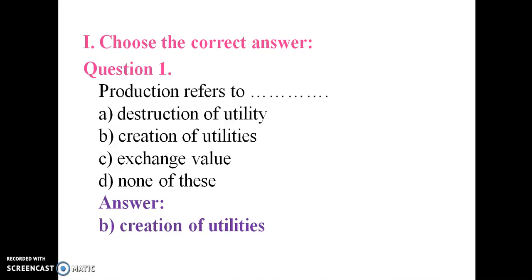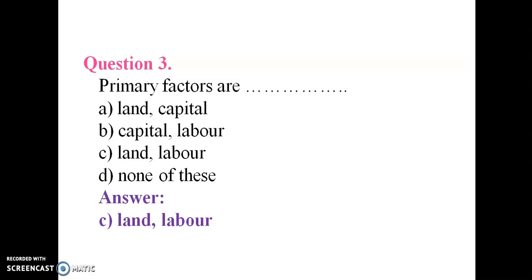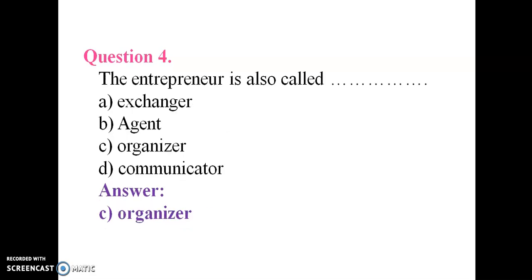First, production refers to creation of utilities. Utilities are in the nature of form utility, time utility, and place utility. Primary factors are land and labor. Entrepreneur is also called as organizer.